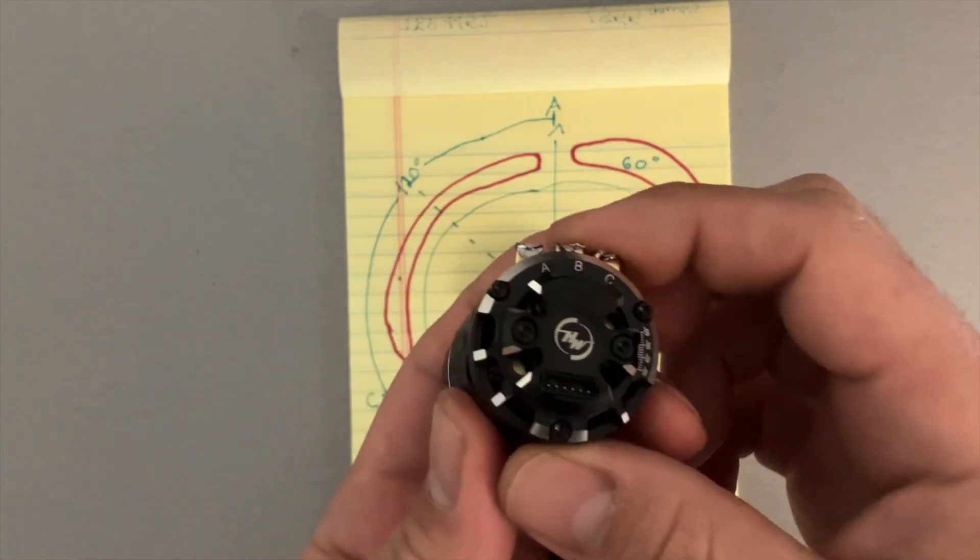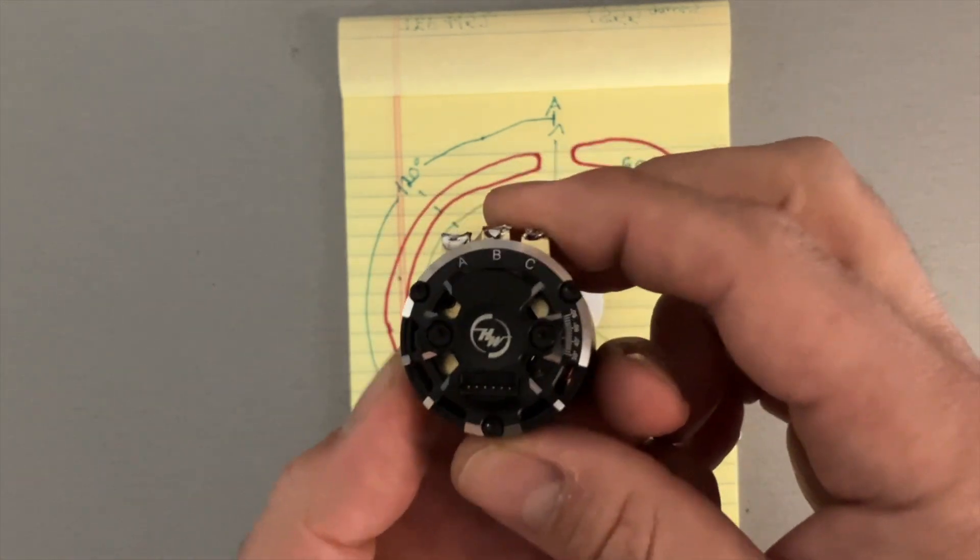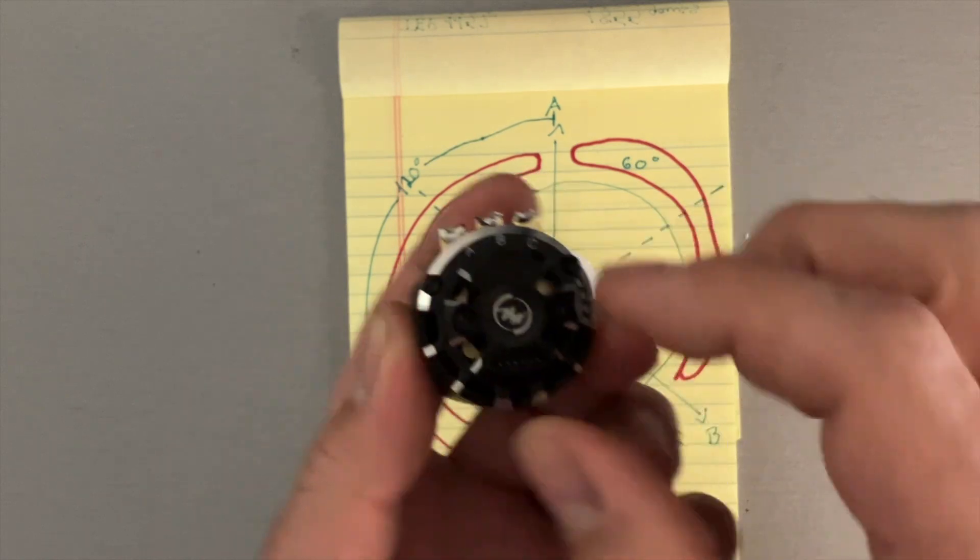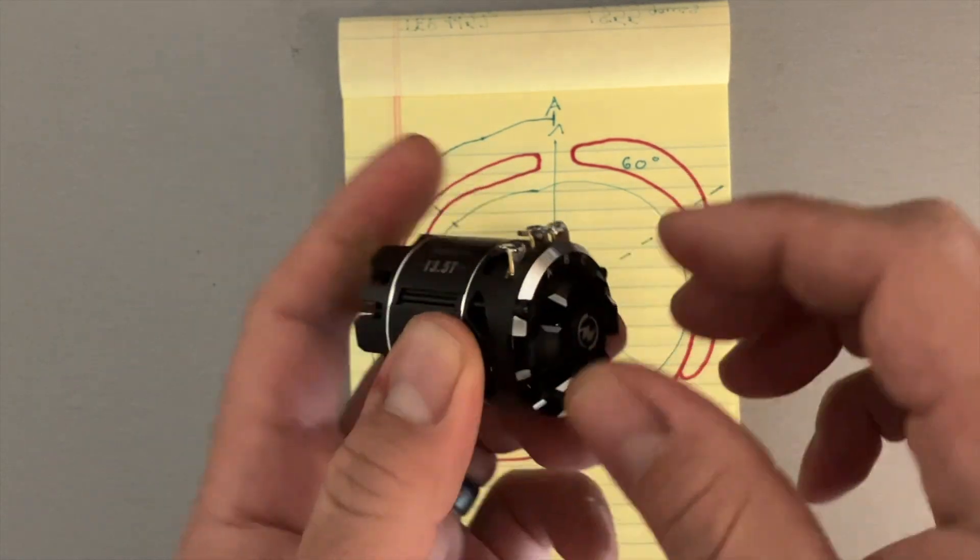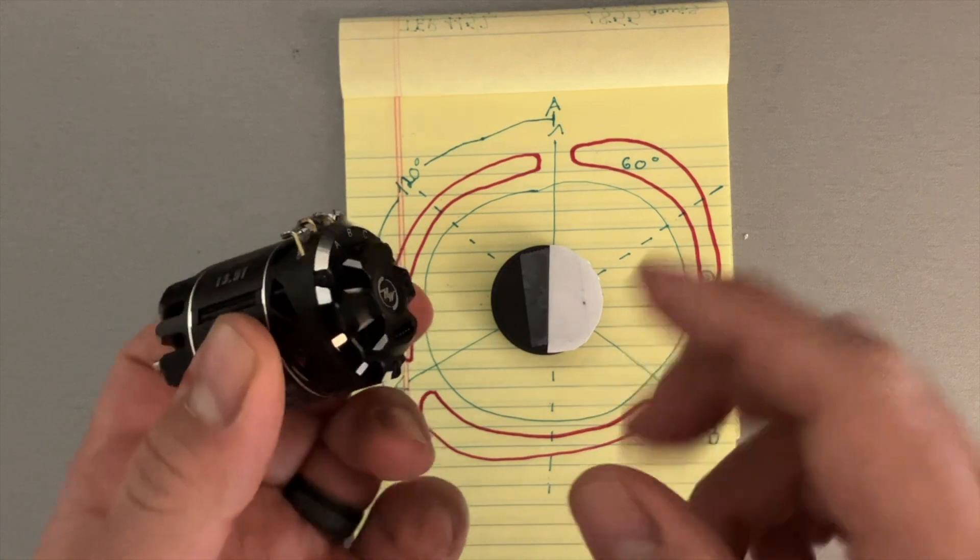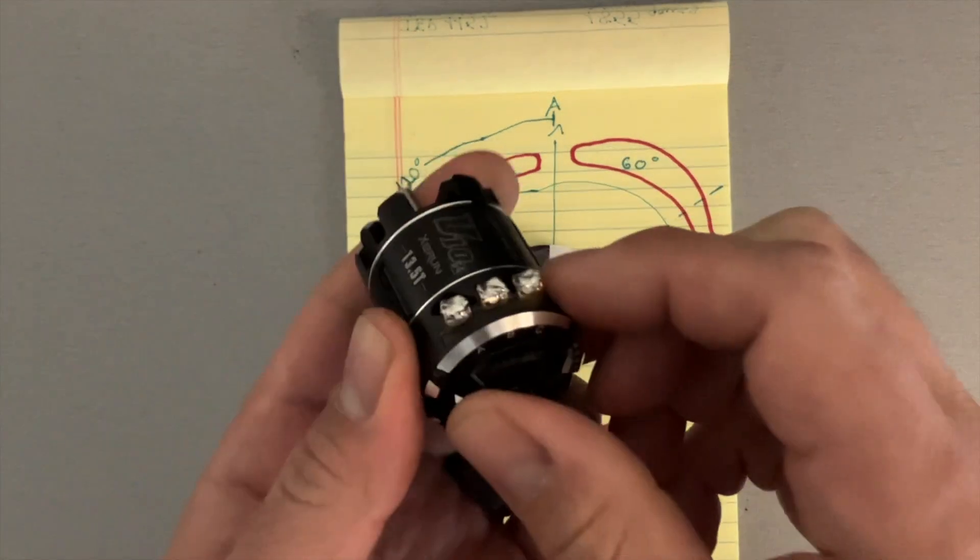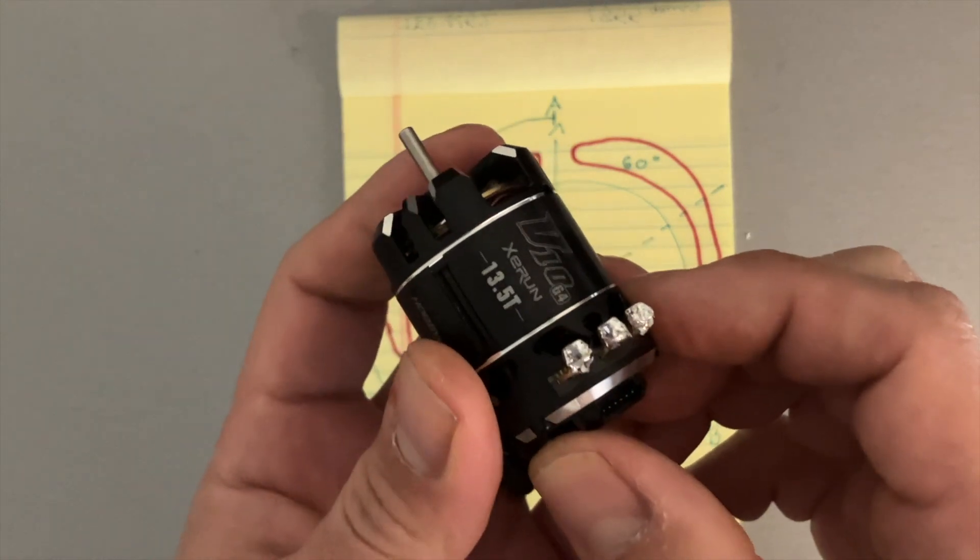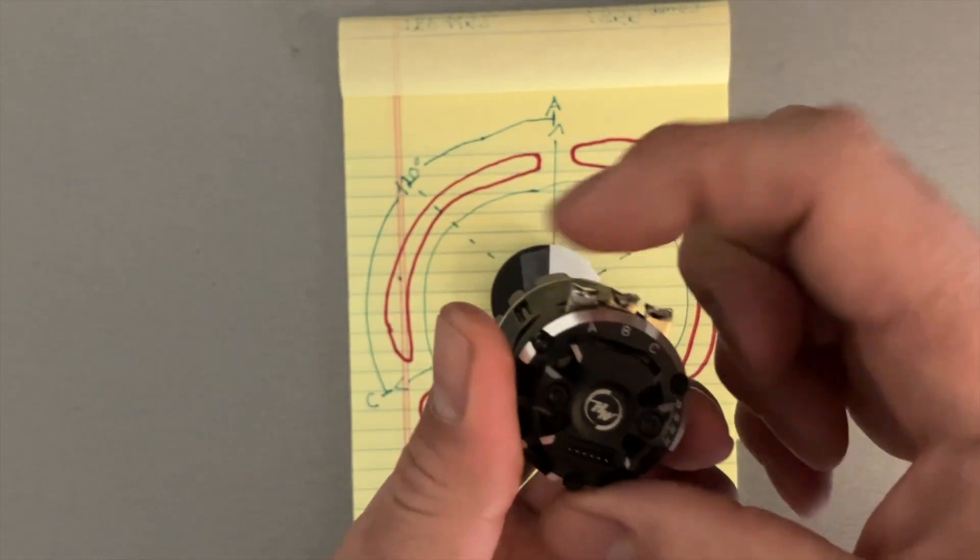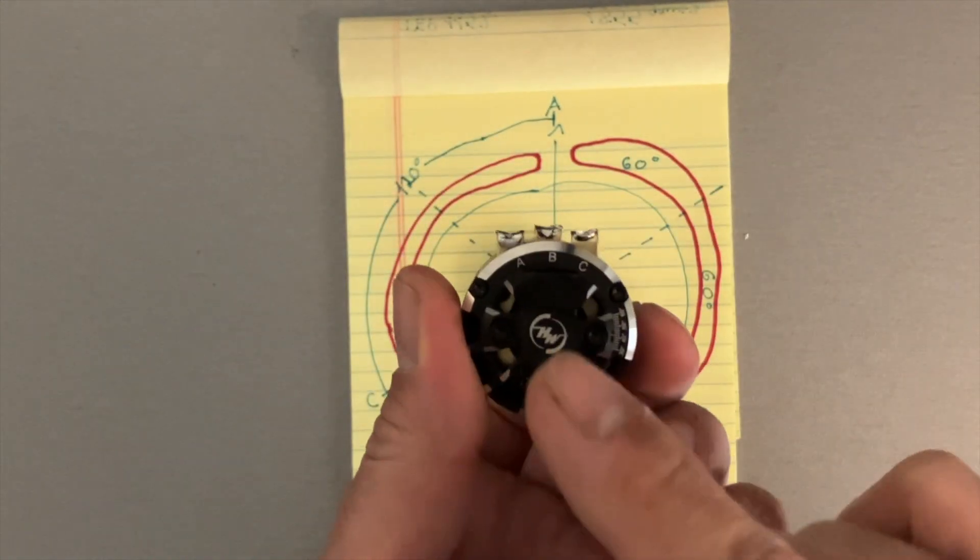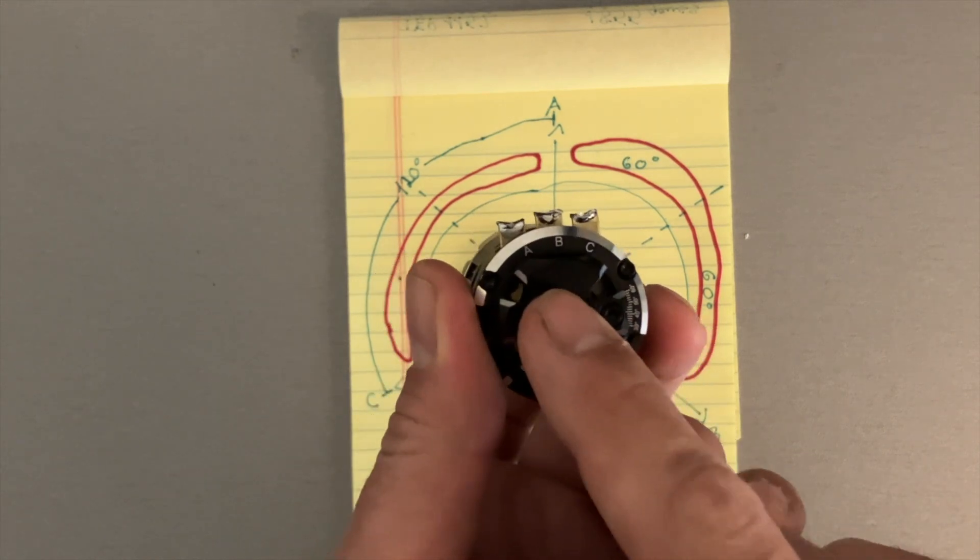So first, let's talk about timing on the motor. This is mechanical timing because you mechanically change the timing on here. And what ends up happening is you have three phases. You have A, B, C. And if you've ever noticed, these are labeled A, B, C. And with brushless motors, these are alternating current.